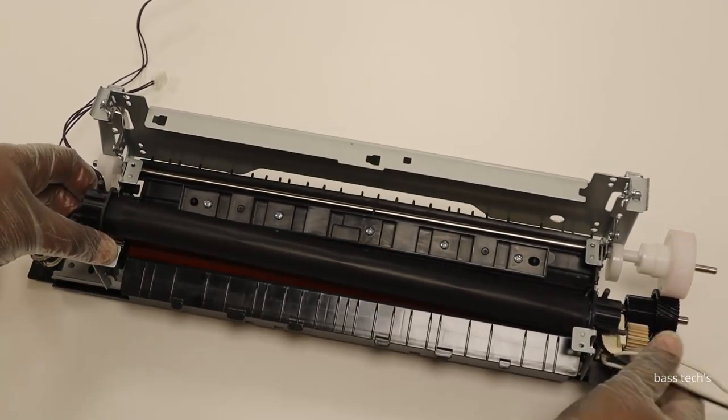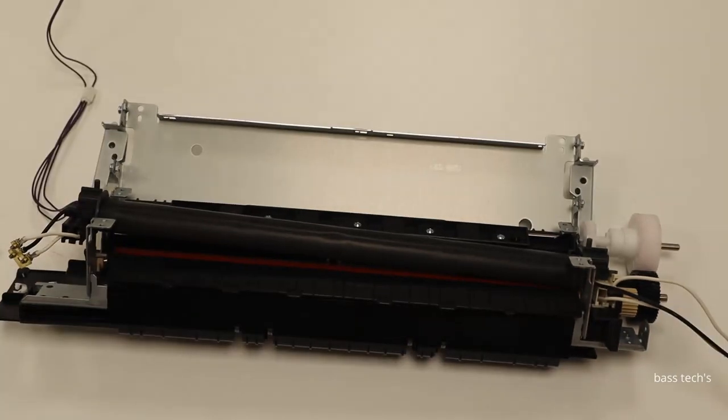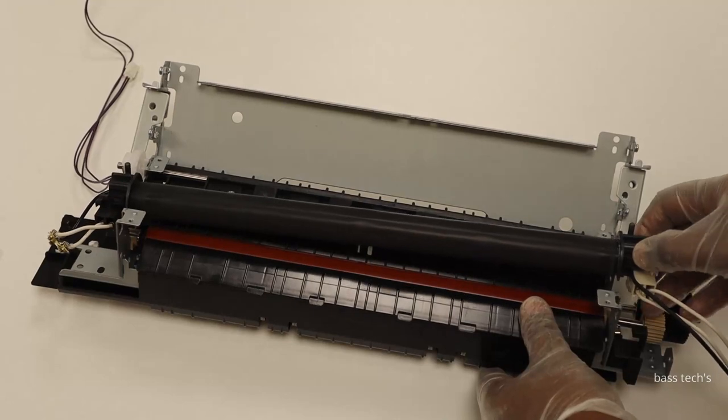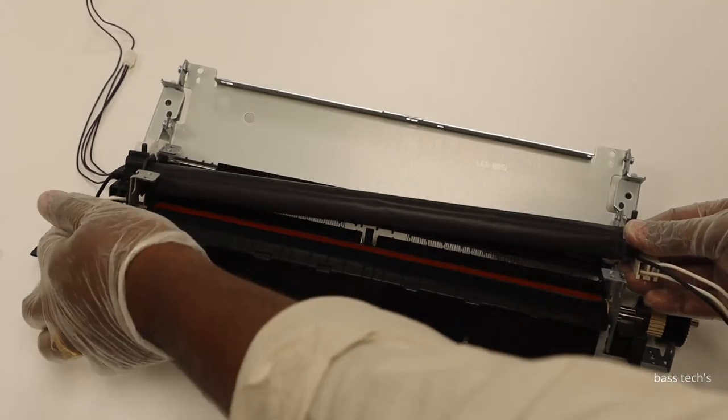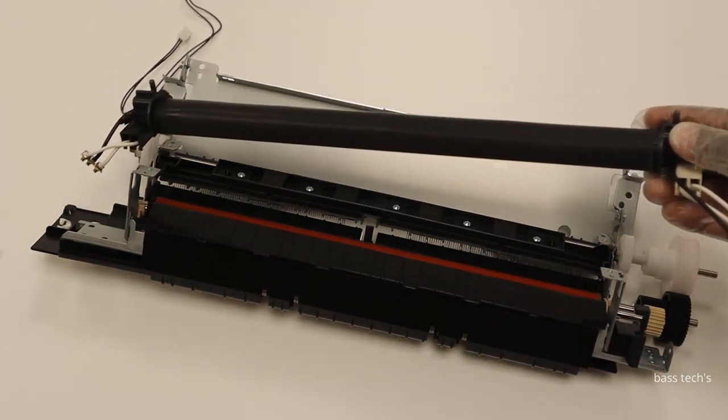Gently pull out the fixing assembly by removing the cable from its slot. It will also have bushing support, so carefully remove the bushings from their respective places. Now I have taken it out.